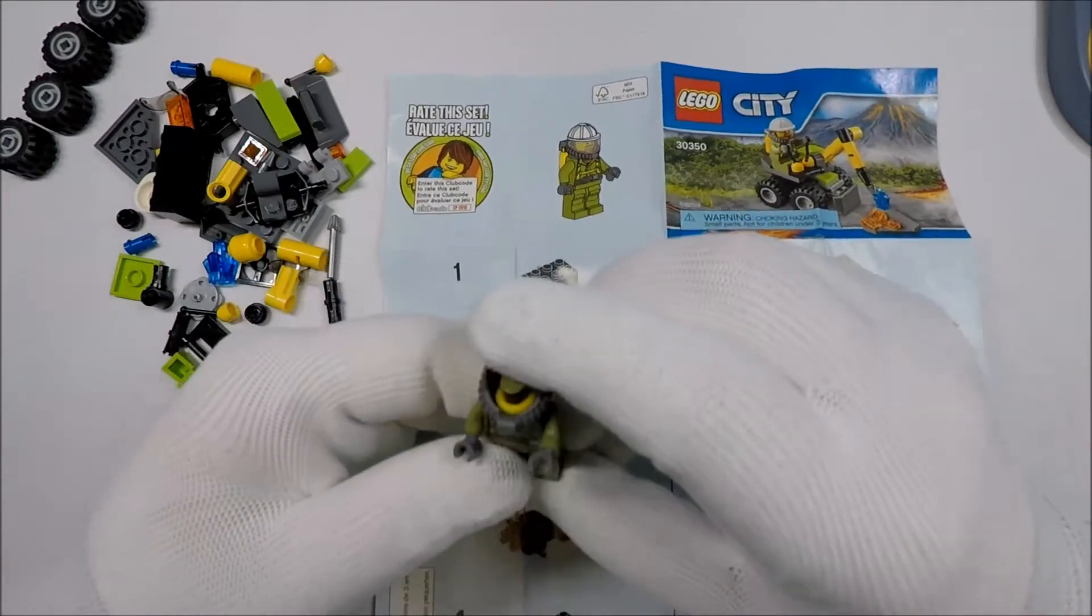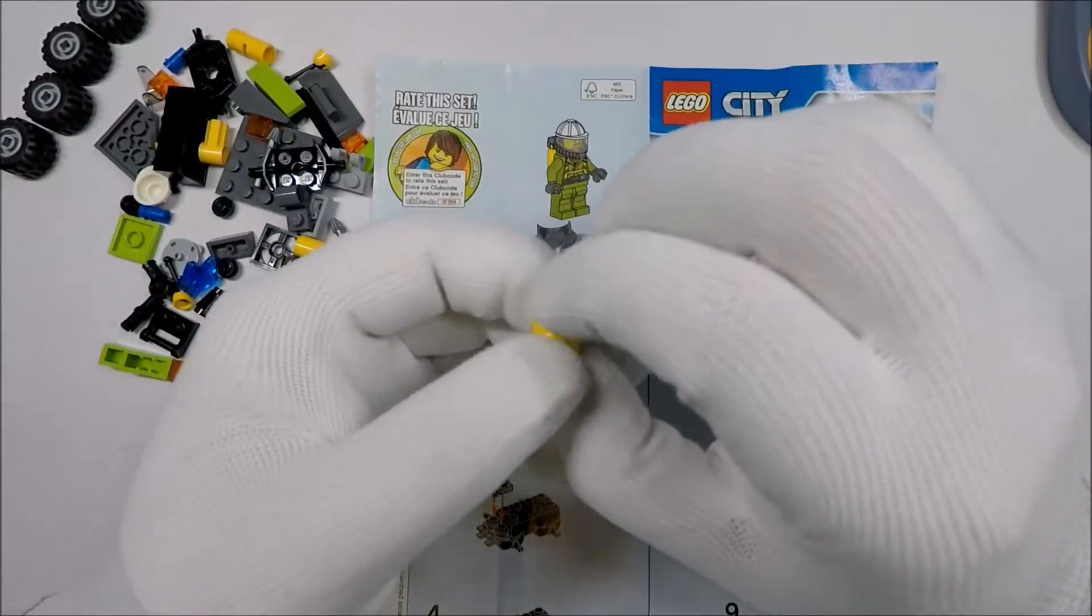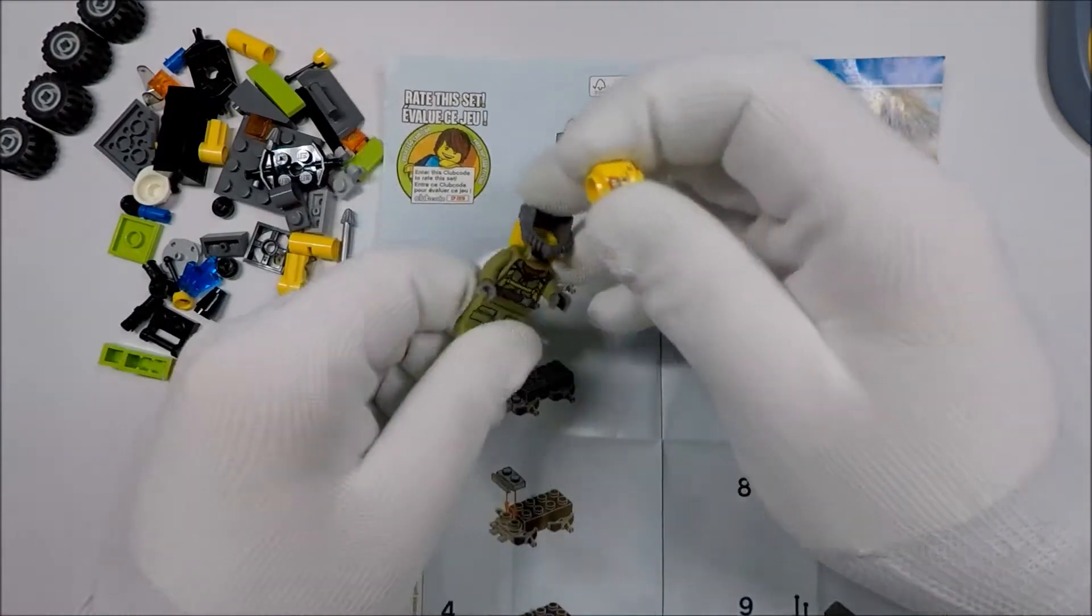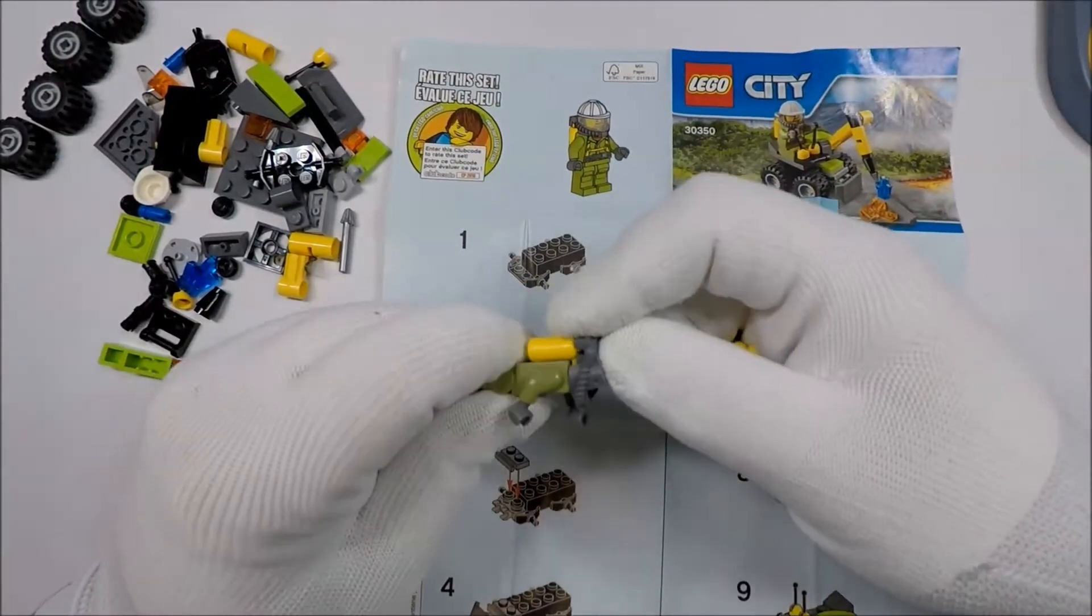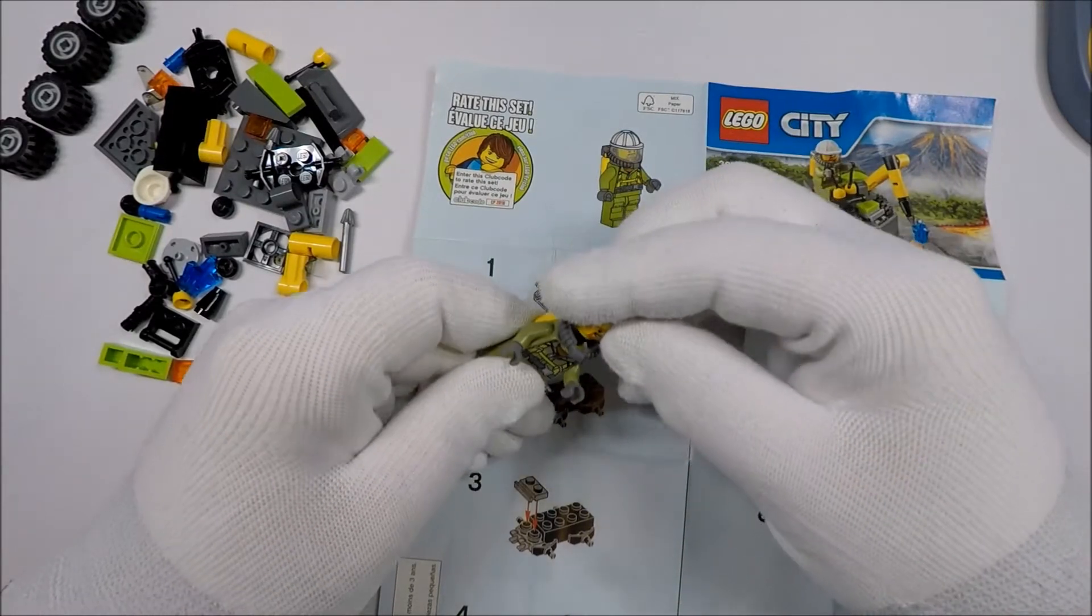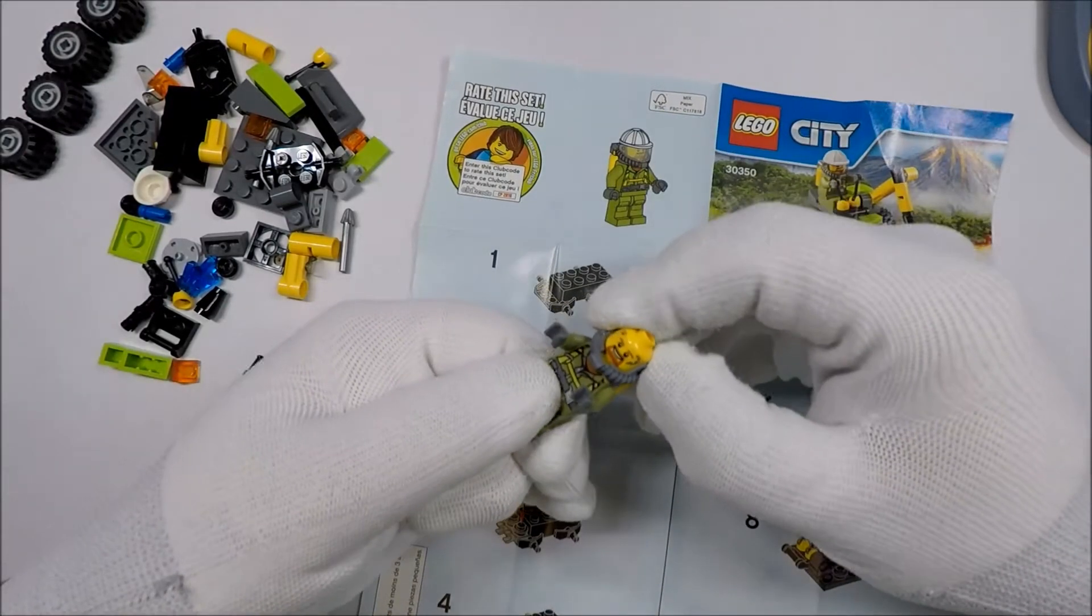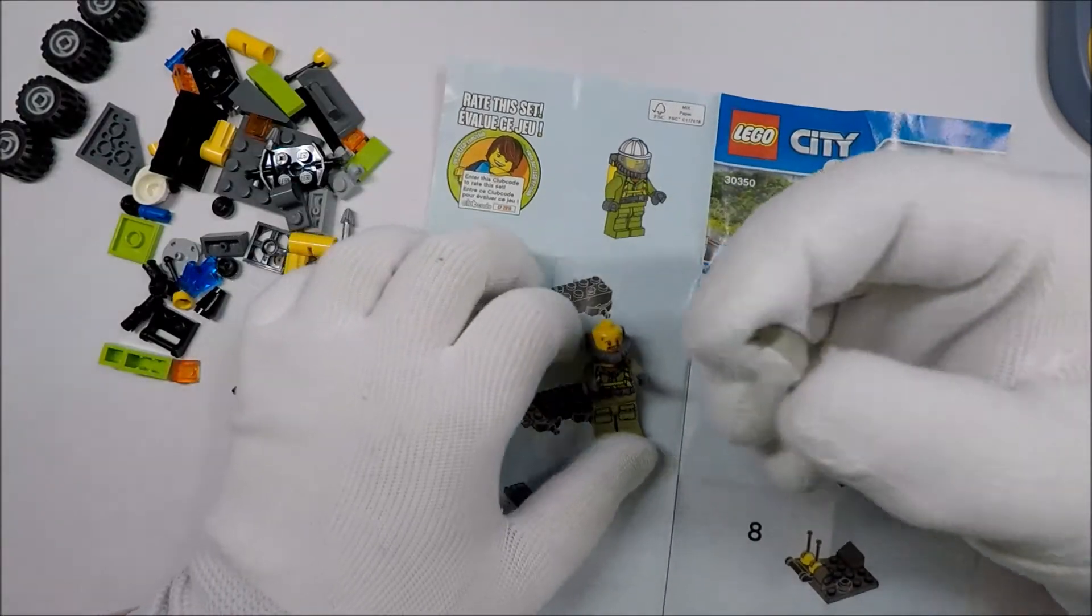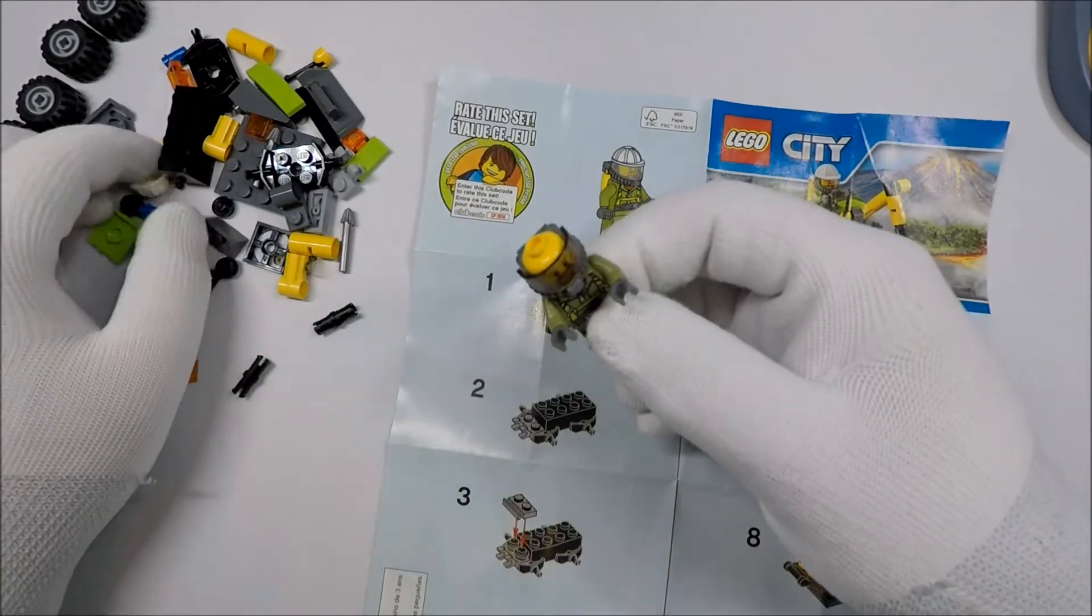So this sits in there, then this goes over here like so. Dude's head almost rolled away. We just have one option for faces. This goes on like that, and then he goes on like this. This clips down like that, and then we have a visor which is going to clip on like so, and then he gets his hard hat.